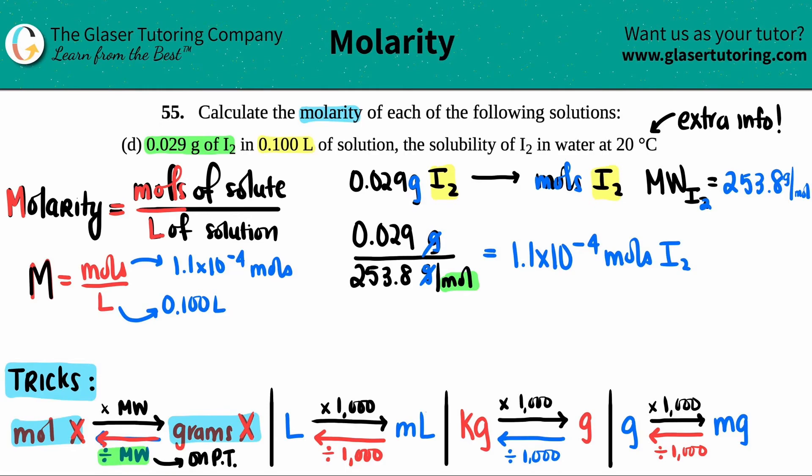Now we're ready to solve. We now know the moles, we had the liters, let's do the division to get the molarity. Molarity equals 1.1 times 10 to the negative fourth moles divided by 0.100 liters. The mole does not cancel with the liters—they're two totally different units—so the units for molarity is moles over liter. 1.1 times 10 to the negative fourth divided by 0.1 is 1.1 times 10 to the negative three, and that's either capital M or mole over liter. That's the final answer.